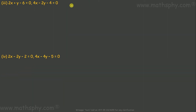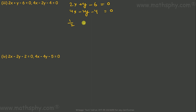For the third pair: 2x + y - 6 = 0 and 4x - 2y - 4 = 0. a1/a2 is 2/4 which is 1/2, and b1/b2 is 1 over -2, which is not equal. So this gives intersecting lines — meaning consistent.